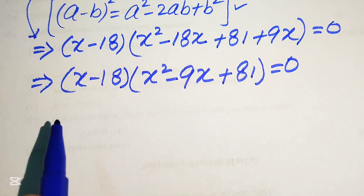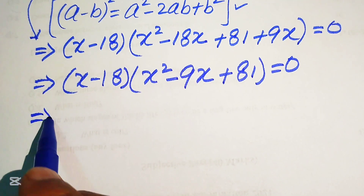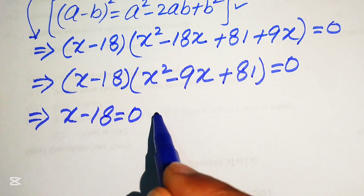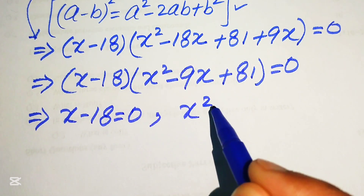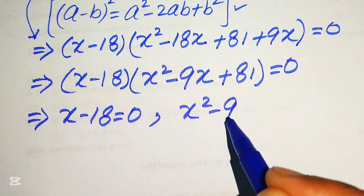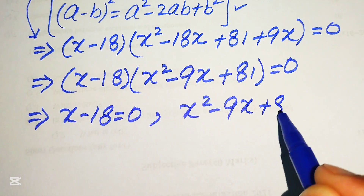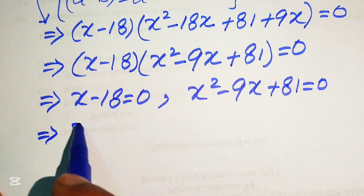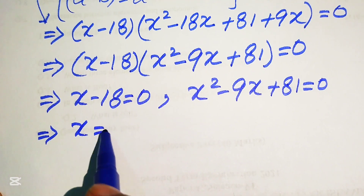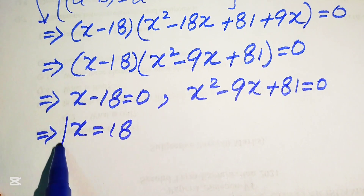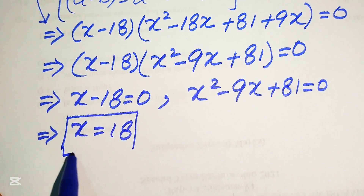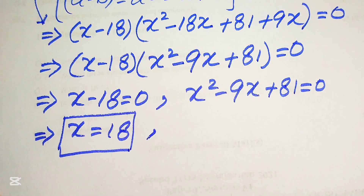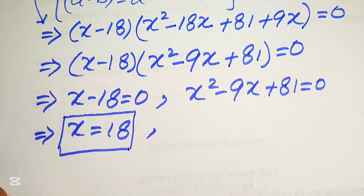We now split into two cases. Case 1: x - 18 = 0, giving x = 18. This is our first root and it is a real root. Case 2: x² - 9x + 81 = 0, which we will solve next.